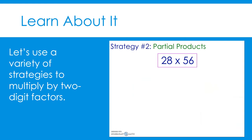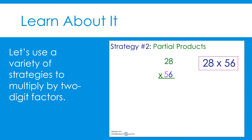Now, let's solve the same problem, 28 times 56, using partial products. When using partial products, we can line up the digits according to place value. Again, we have color-coded the digits in 56: the tens place is purple and the ones place is blue. Let's multiply 28 by 6 first. We will begin by multiplying 8 times 6. 8 times 6 equals 48. We will record that partial product under the problem, being sure to line up the digits according to place value. Next, let's multiply 20 times 6 — we are multiplying by 20 and not by 2, because this 2 is in the tens place, so it has a value of 20. 20 times 6 equals 120. We will write 120 underneath 48.